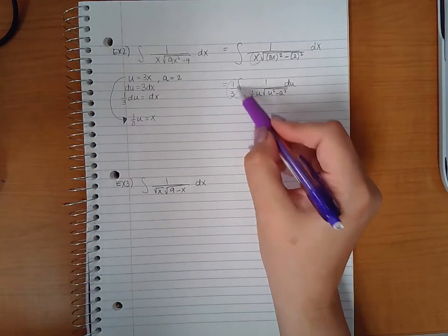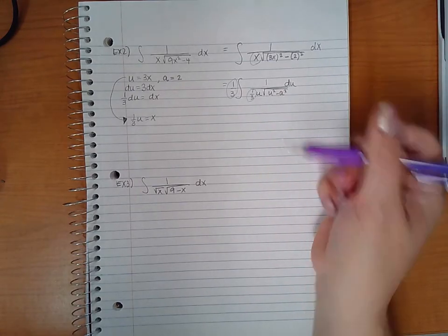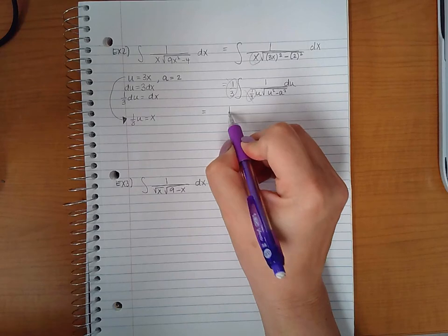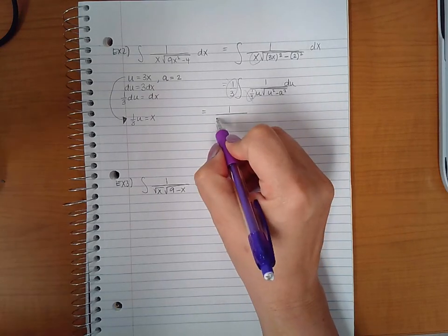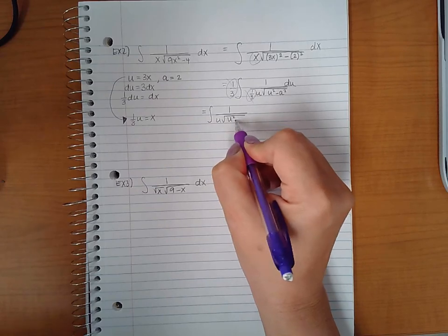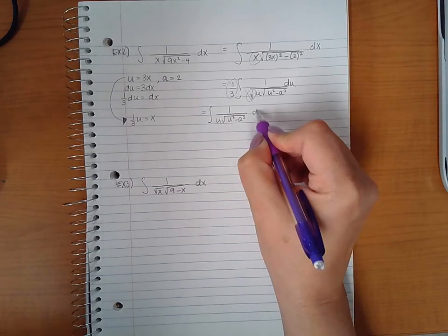Now you'll notice that this 1 third and this 1 third in the denominator are going to reduce. So I will end up with just the expression 1 over u square root of u squared minus a squared du.